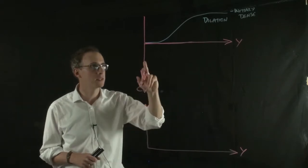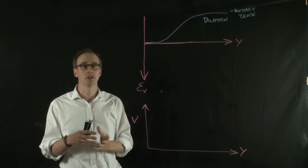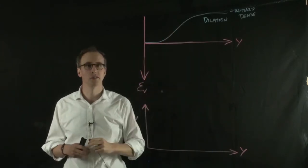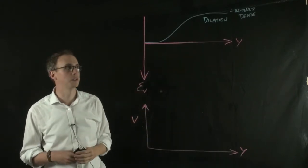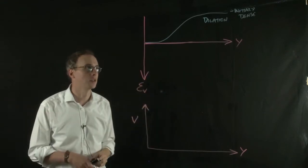The reason why we flip the axis is we kind of like the idea of putting dilation as a sort of increasing positive feature on the diagram. So it's just a convention. We could flip it around and it should be exactly the same, but this is just the convention.